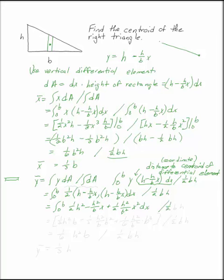You can multiply that out and take the integral. One-half h squared b, minus one-half h squared b over b, b squared, plus one-sixth h squared over b squared times b cubed, over one-half b h. This is one-sixth of h squared b divided by one-half of b h. So y bar is one-third of h, because everything else cancels out.